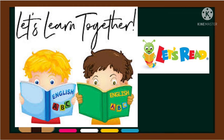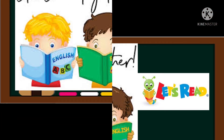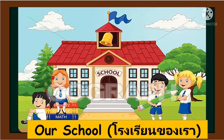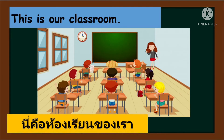Now let's have an activity. Let's read and practice this structure. Repeat after me. What's in the picture? It is our school. Again — our school. What are some places of our school? Let's begin. This is our classroom. Again — this is our classroom.